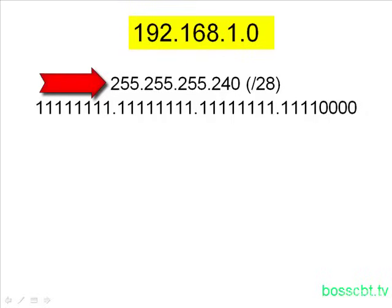Now that's a slash 28 in prefix notation, and we know that because if we look at this subnet mask in binary, we can see there are 28 one bits. All right, so the first thing we want to do is ask ourselves a question.